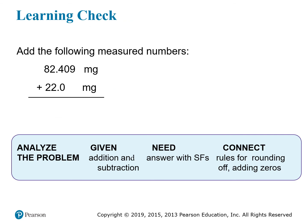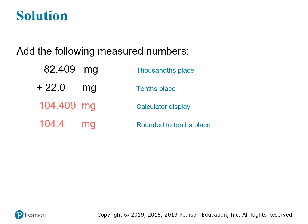Take a minute to try one more example before we move on. Here we need to add two masses: 82.409 milligrams plus 22.0 milligrams. Since the second number has a precision only to the tenths place, our answer has to be rounded to the tenths place as well, so we get 104.4. Remember that we're rounding down because the next digit in the hundredths place is less than 5.